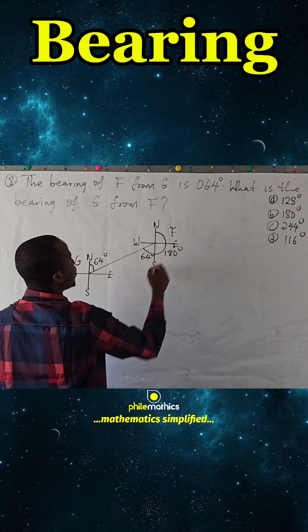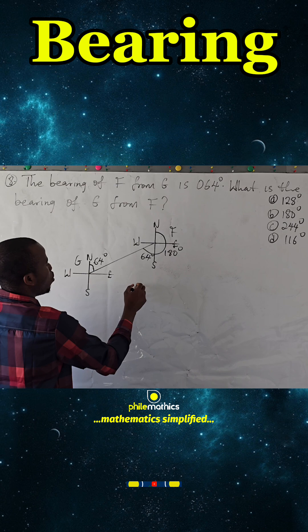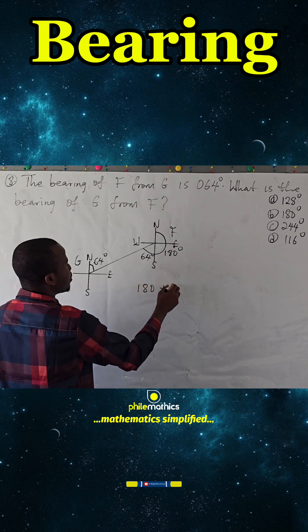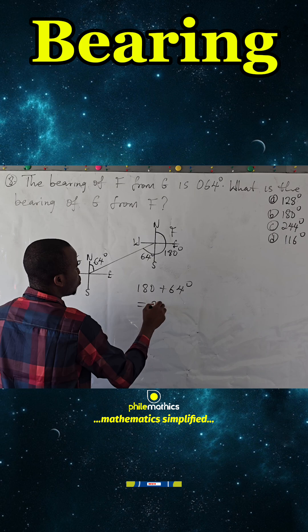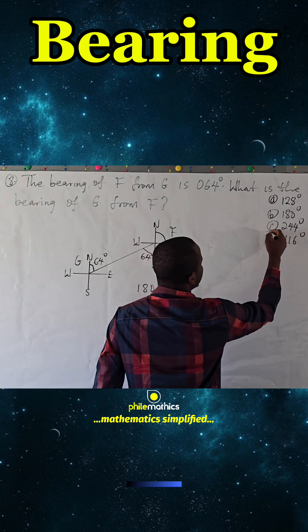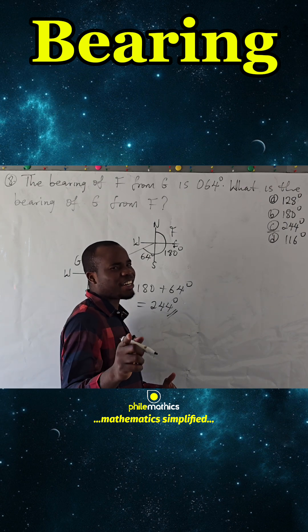So the bearing of G from F is simply 180 plus 64 degrees, which is 244 degrees, and that's C. Thank you for watching, make sure you like and subscribe, bye.